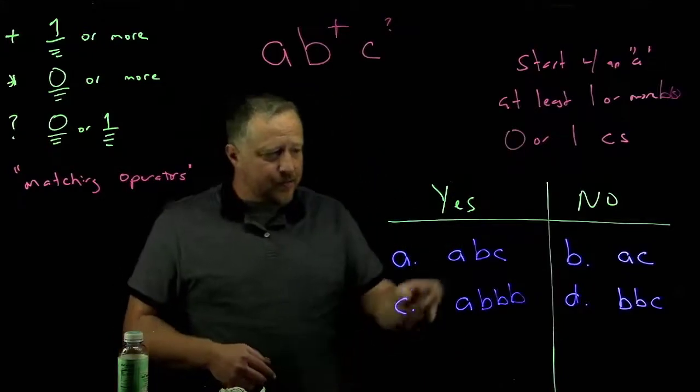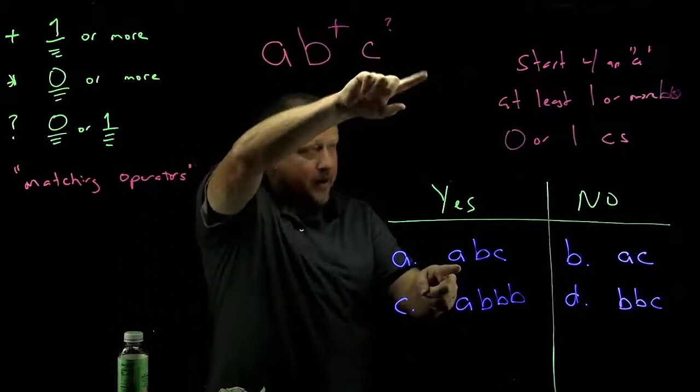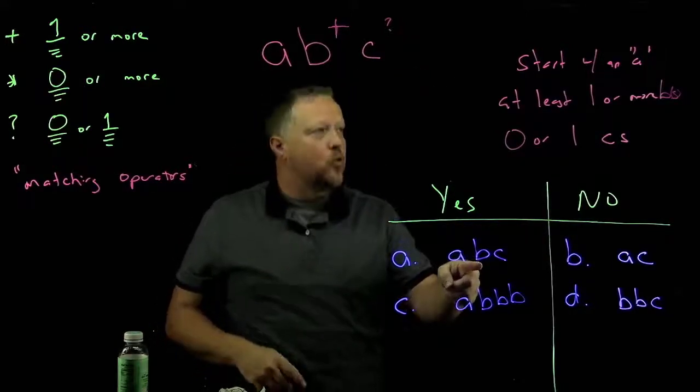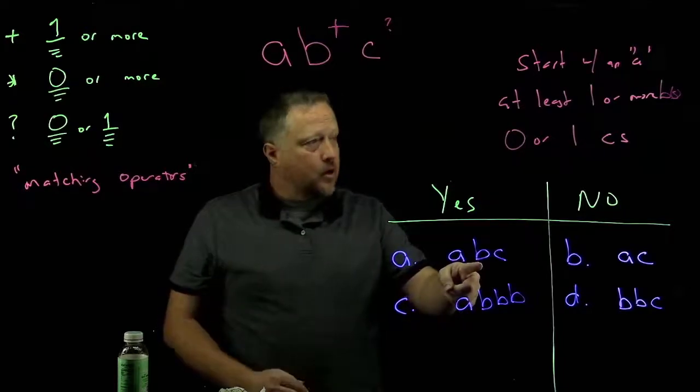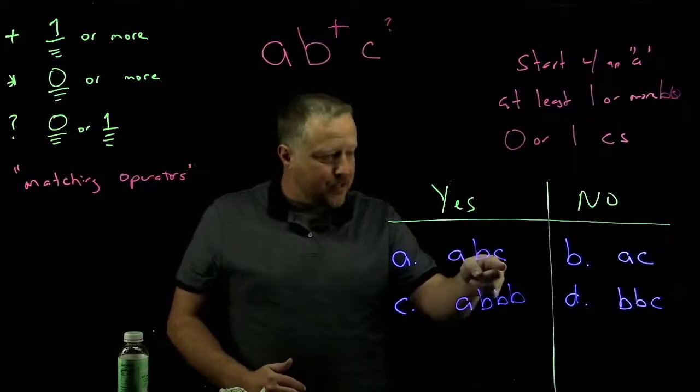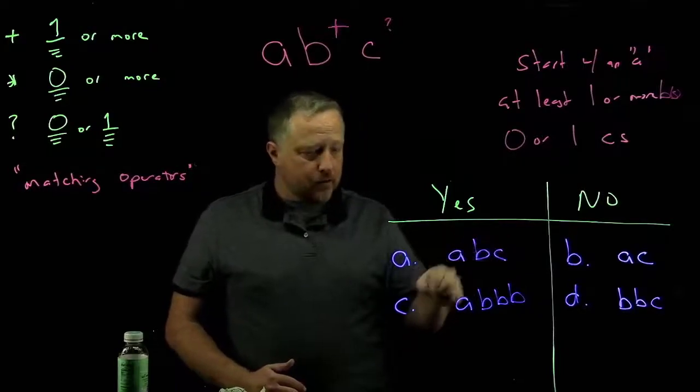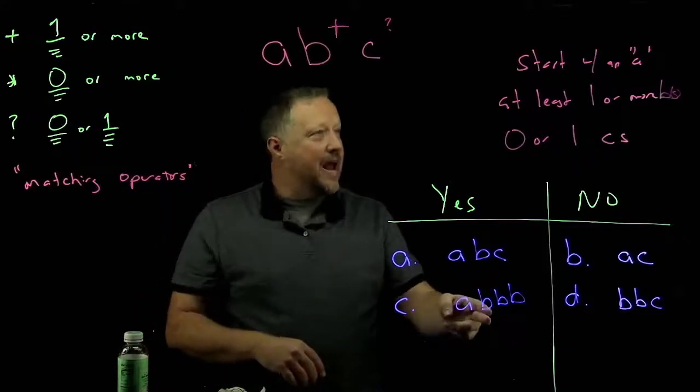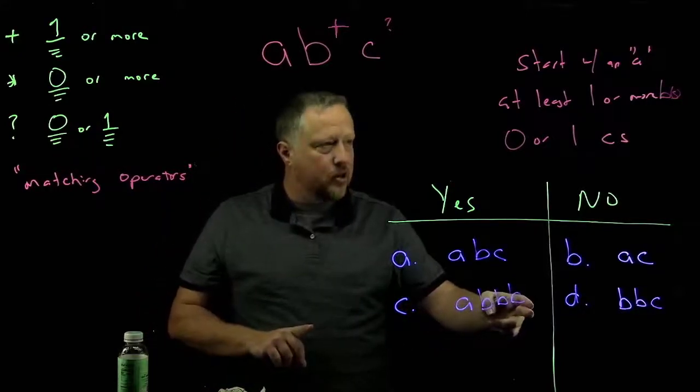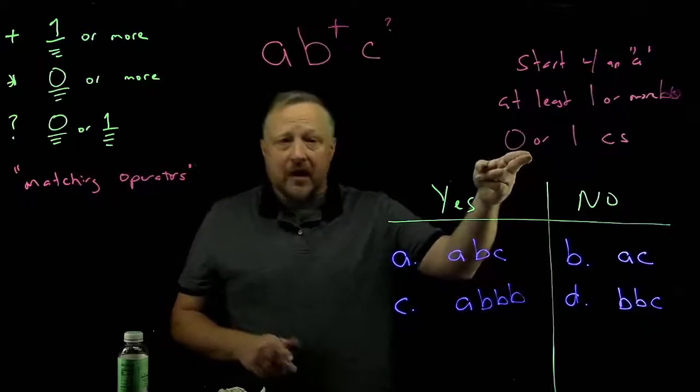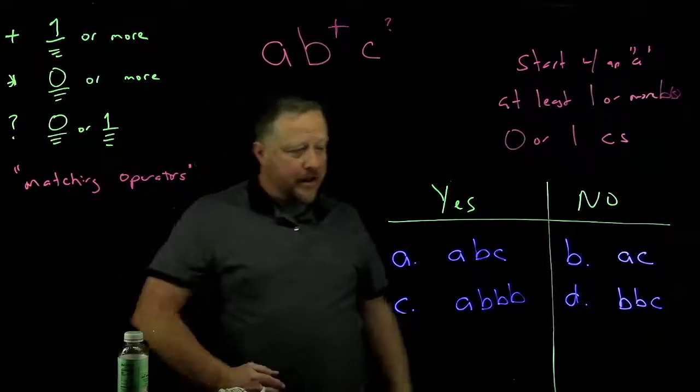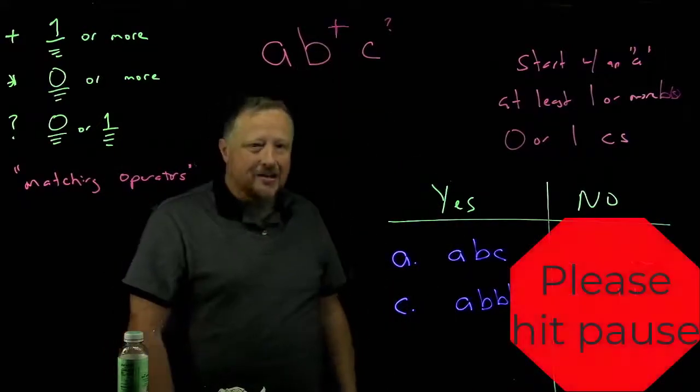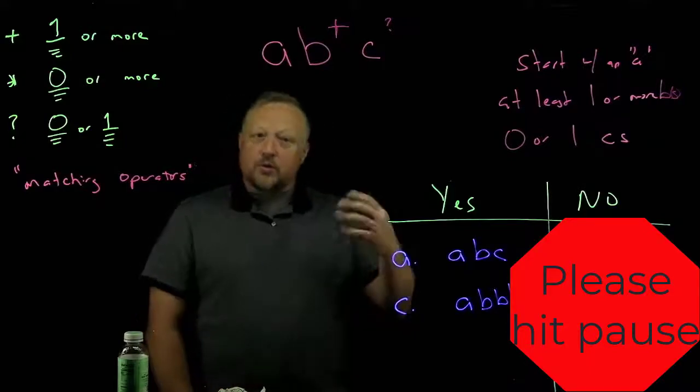All right. Let's look at the yeses. Starts with an A. Now I really should be going by my narrative here. Then it starts at least with one or more B's, and then zero or one C's. So that's perfect. Next one. Starts with an A. We have at least one or more B's, and then we don't have a C, but that's okay. It says zero or one, so that'll work out just fine for our yes match with that type of setup. So let's go on to the next one.